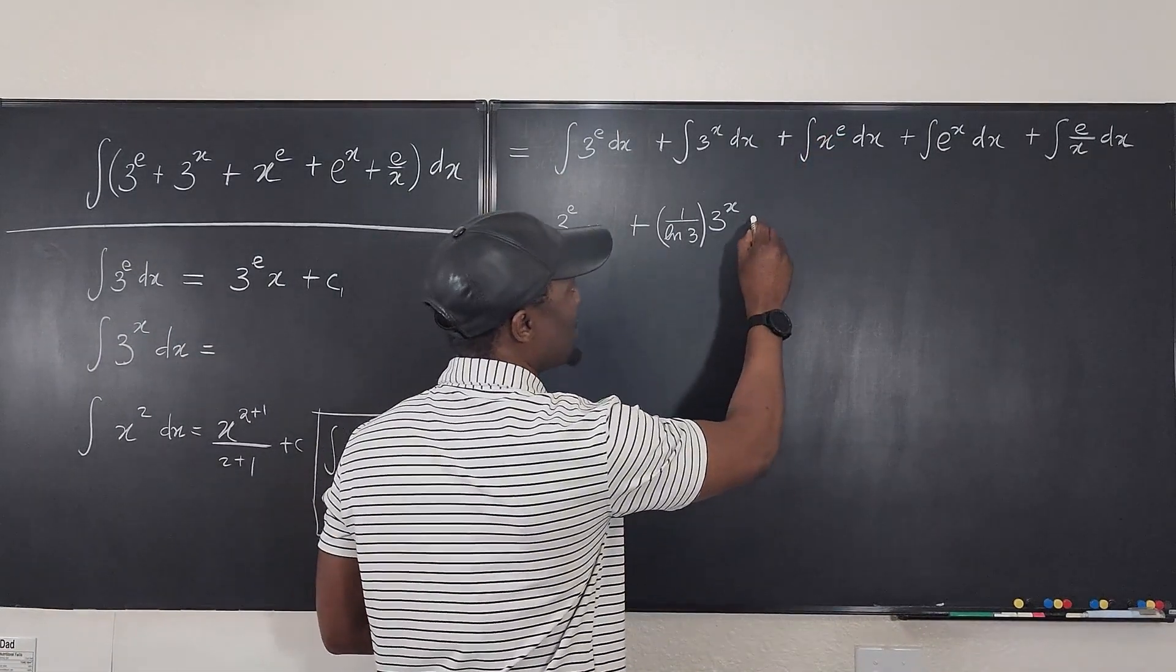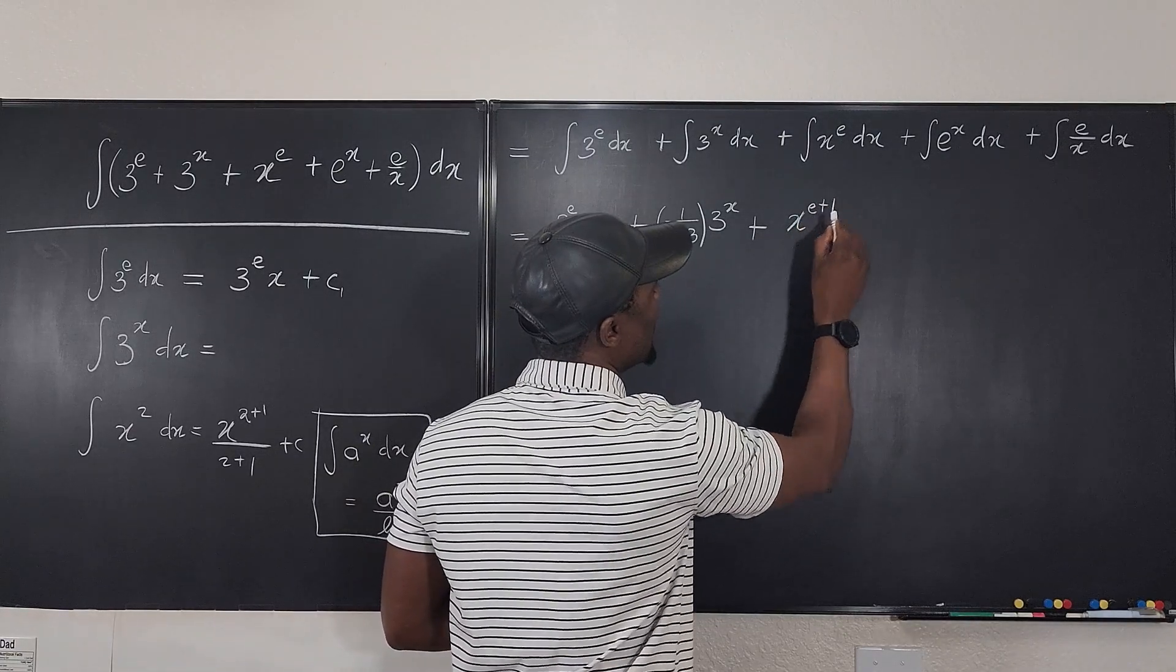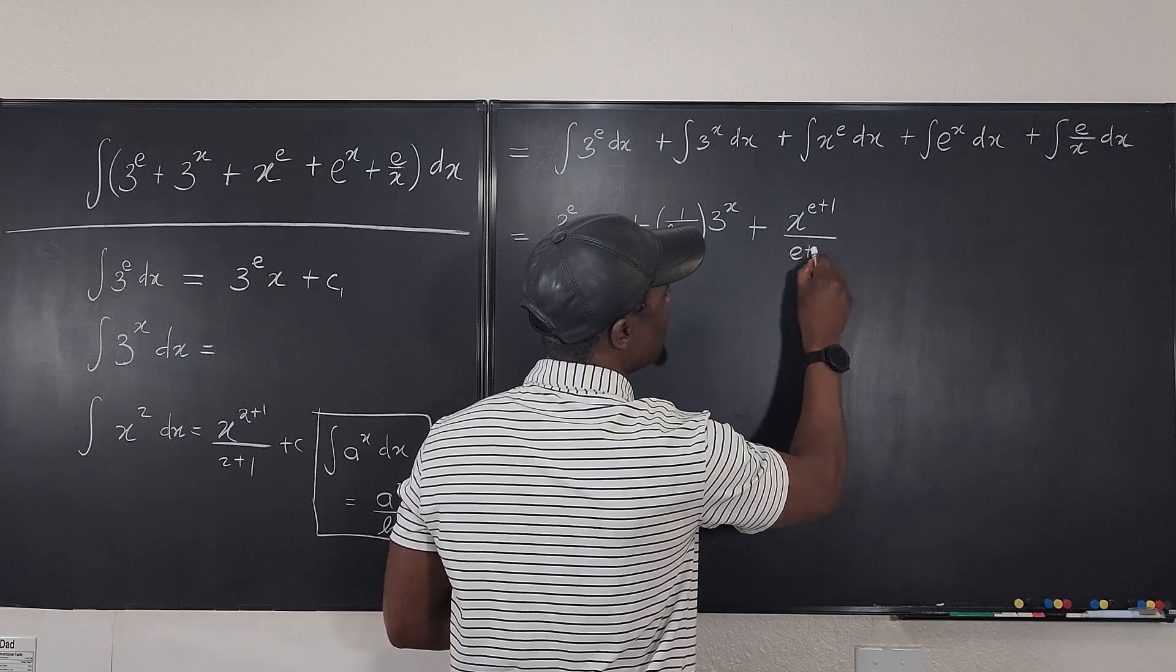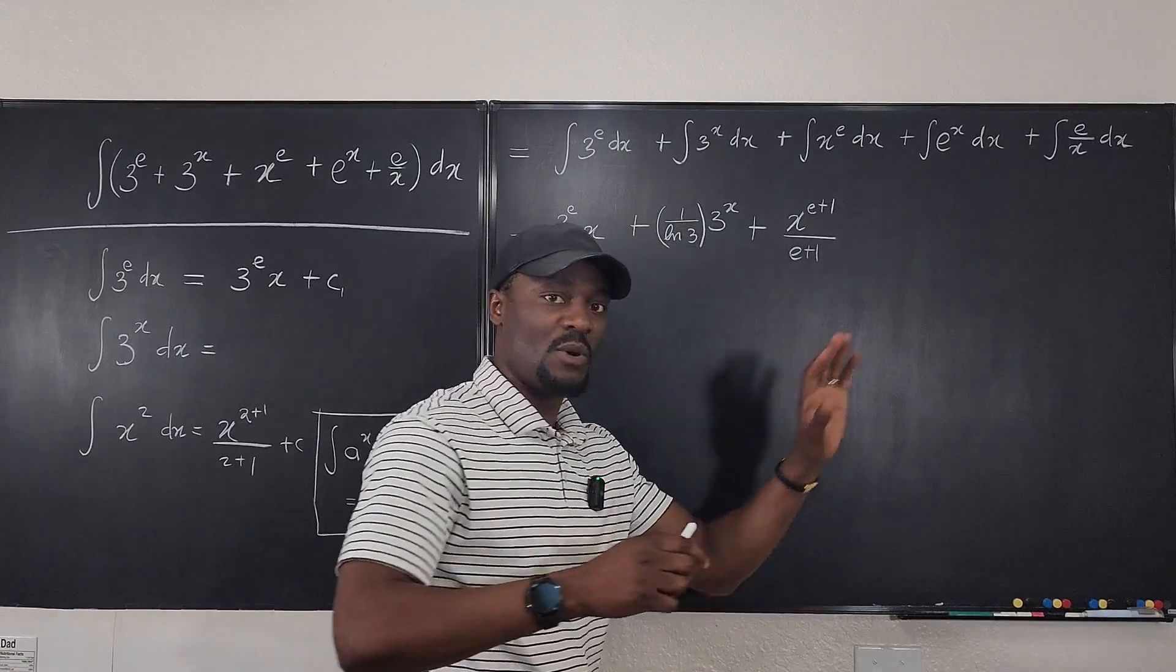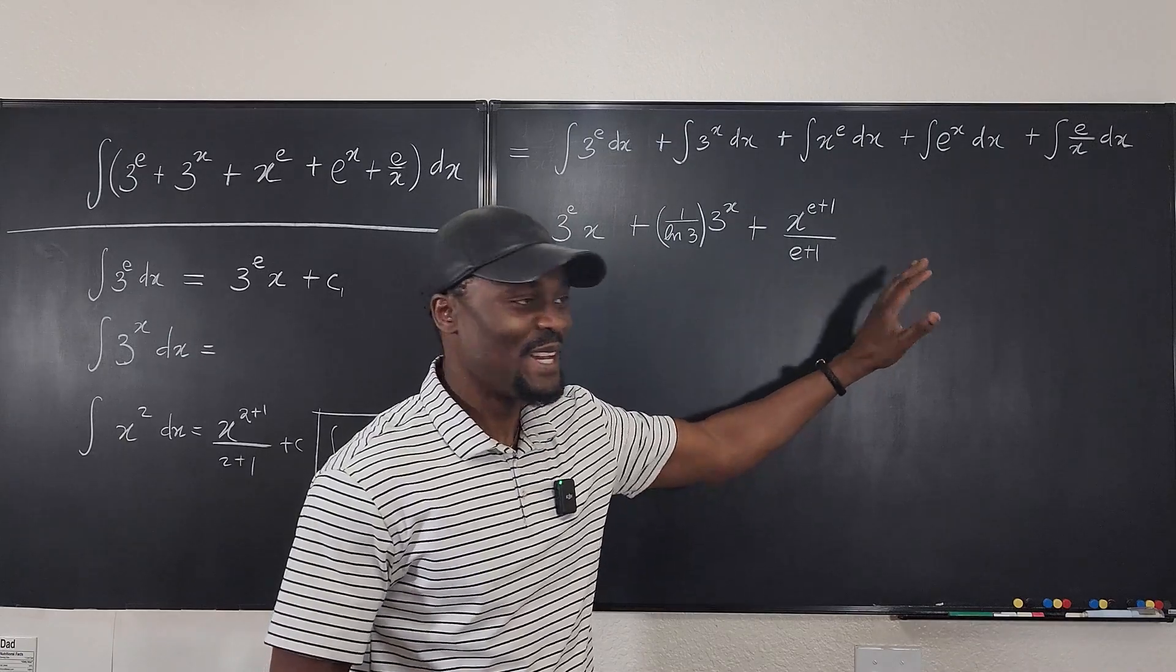So it's going to be plus. The integral is going to be x to the e plus 1 over e plus 1 plus c. But we're going to keep the c aside. And that's it. That's the answer to that one. Let's go to the next one.